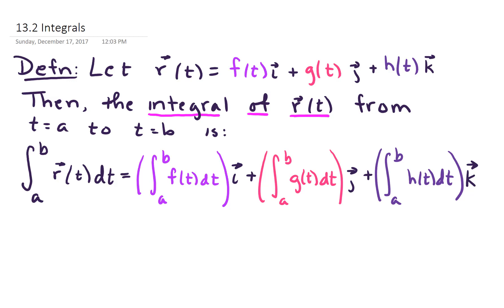The integral of r of t from t equals a to t equals b is the definite integral from a to b of r of t dt, and it's obtained by integrating each component function. In other words, in the first component we'll have the integral from a to b of f of t dt, in the second component the integral from a to b of g of t dt, and in the third component the integral from a to b of h of t dt.